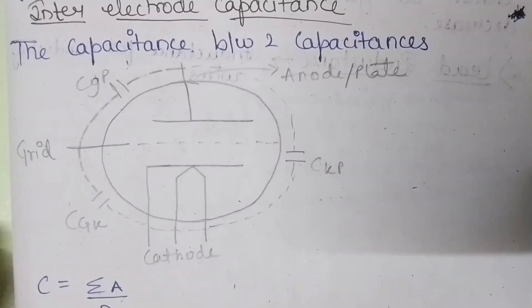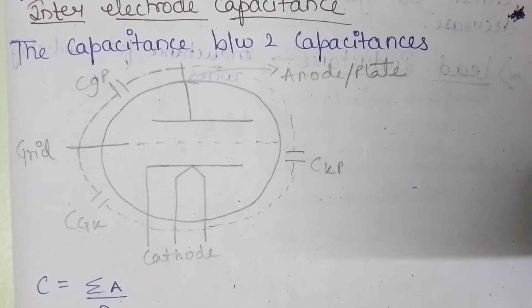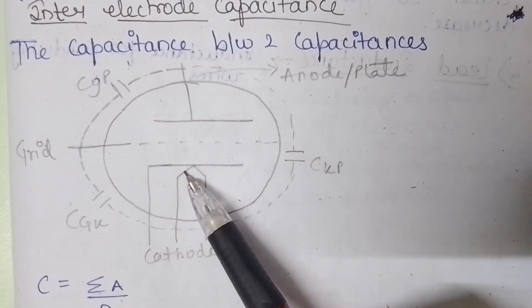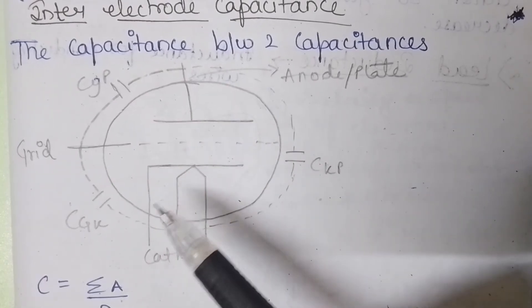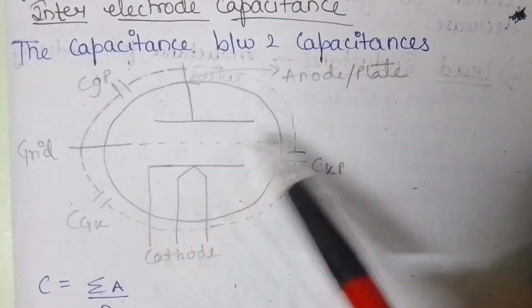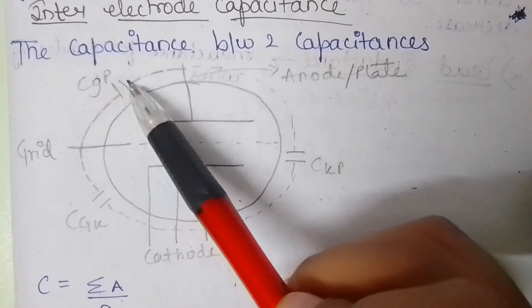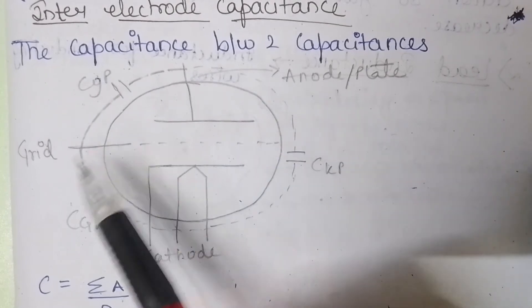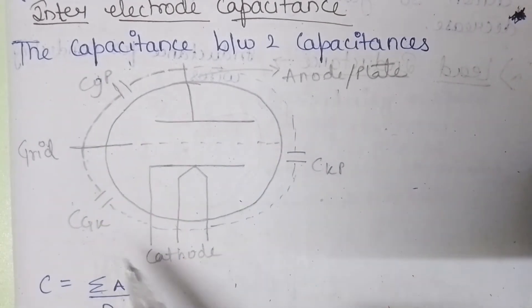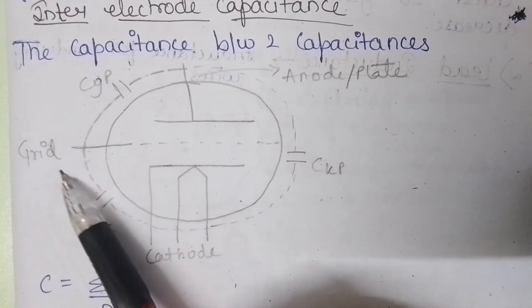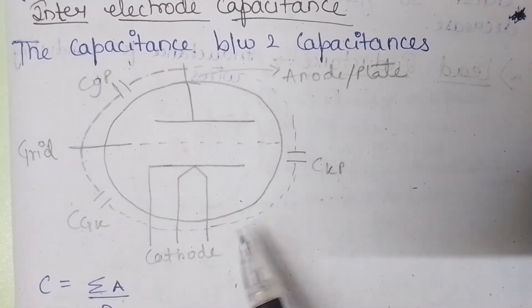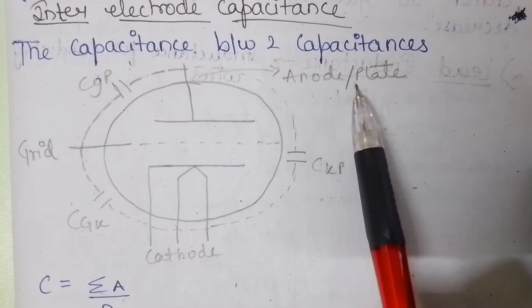The first limitation is intercapacitance effect or inter-electrode capacitance effect. The capacitance between the two electrodes is known as the inter-electrode capacitance. Here in this diagram you can see a vacuum tube or a triode electrode and these are the capacitors. This is Cga between the anode and the grid, and Cgk represents the capacitance between cathode and grid.